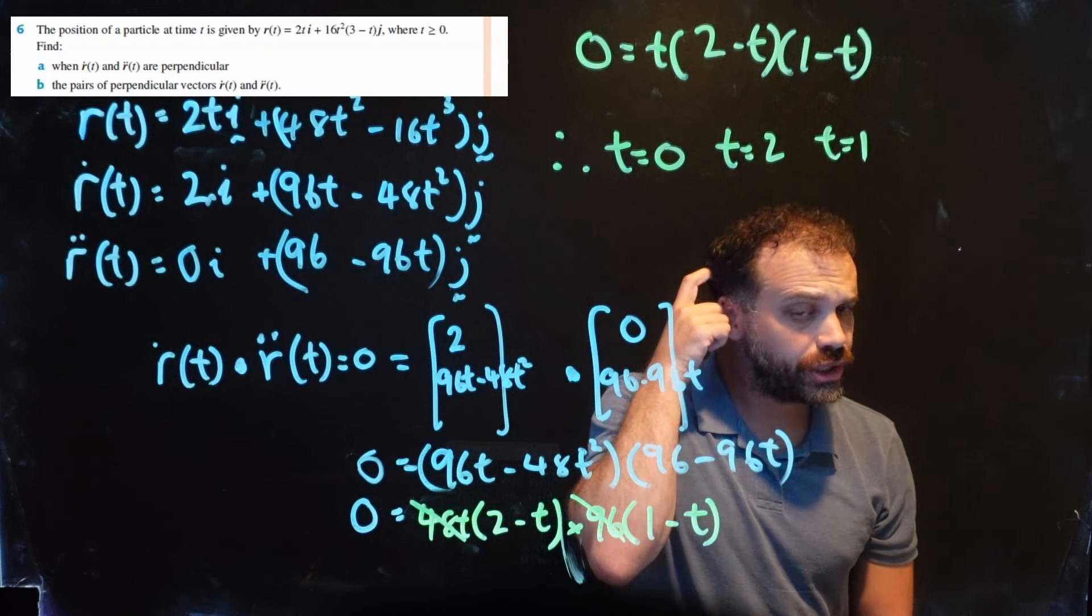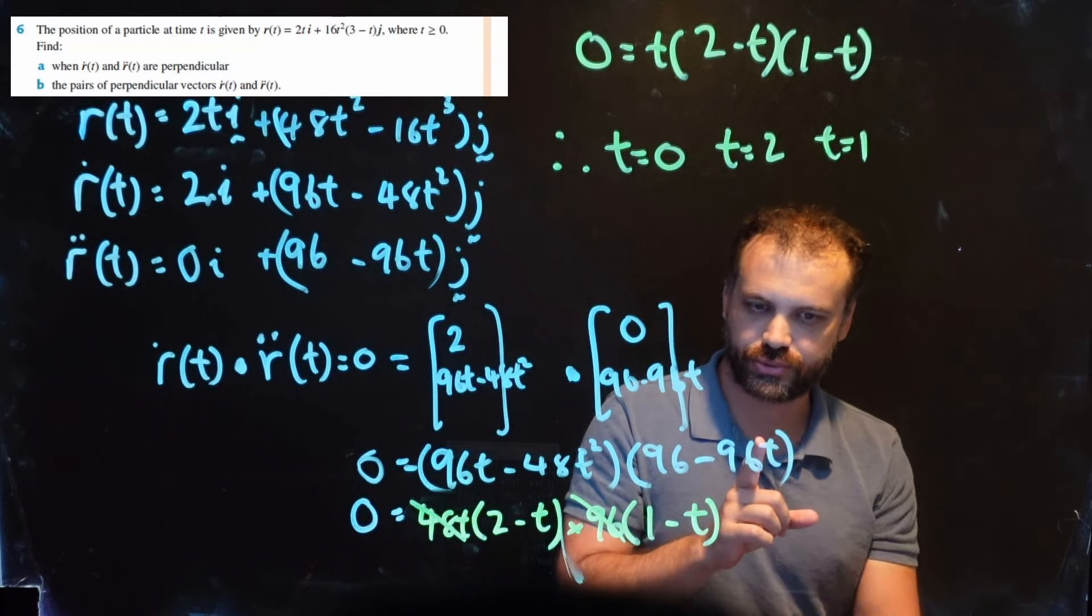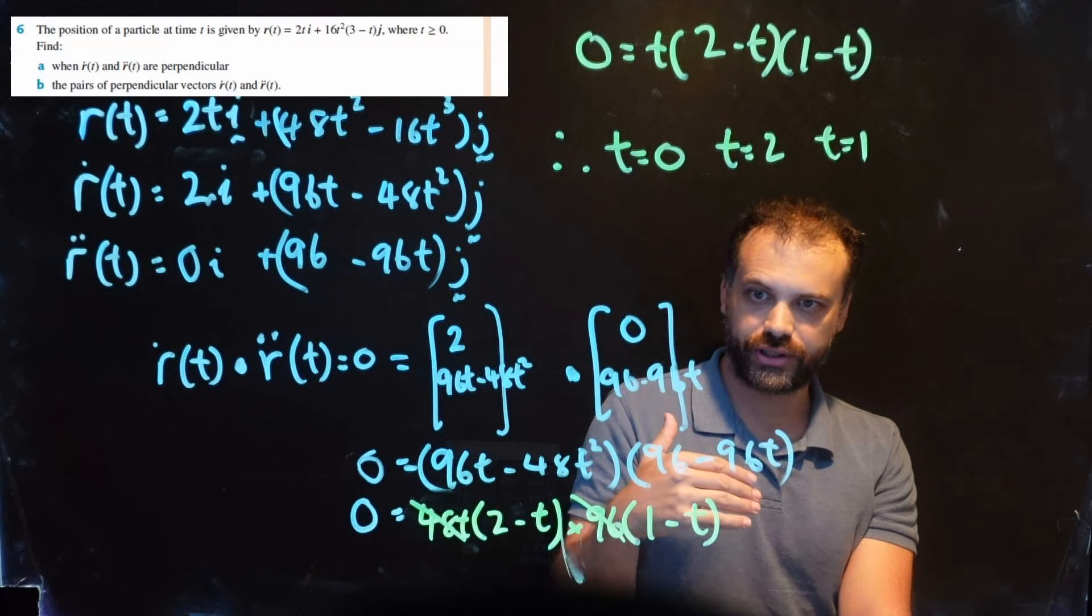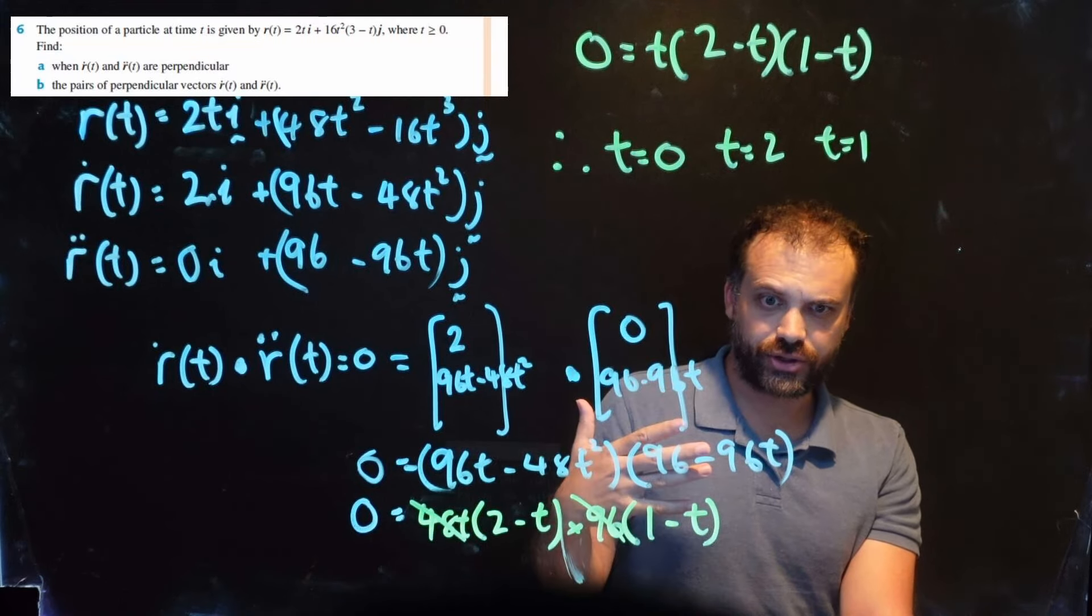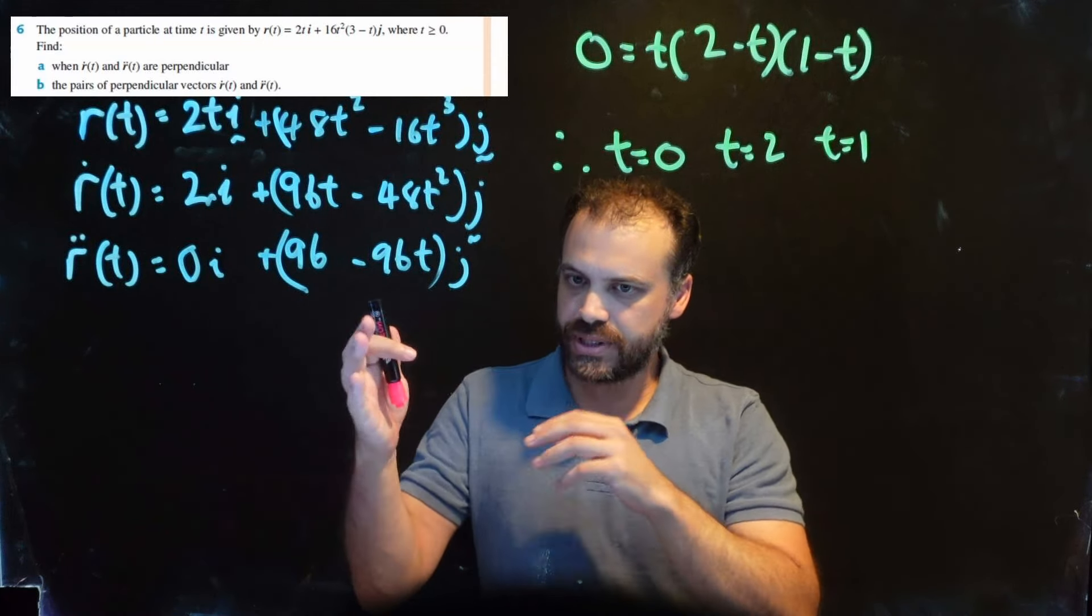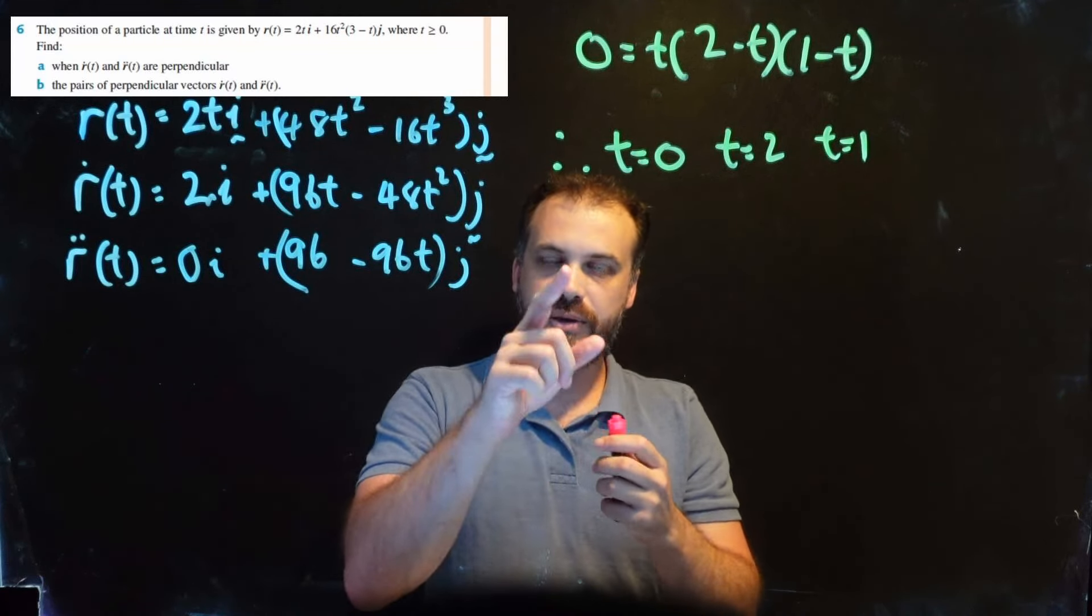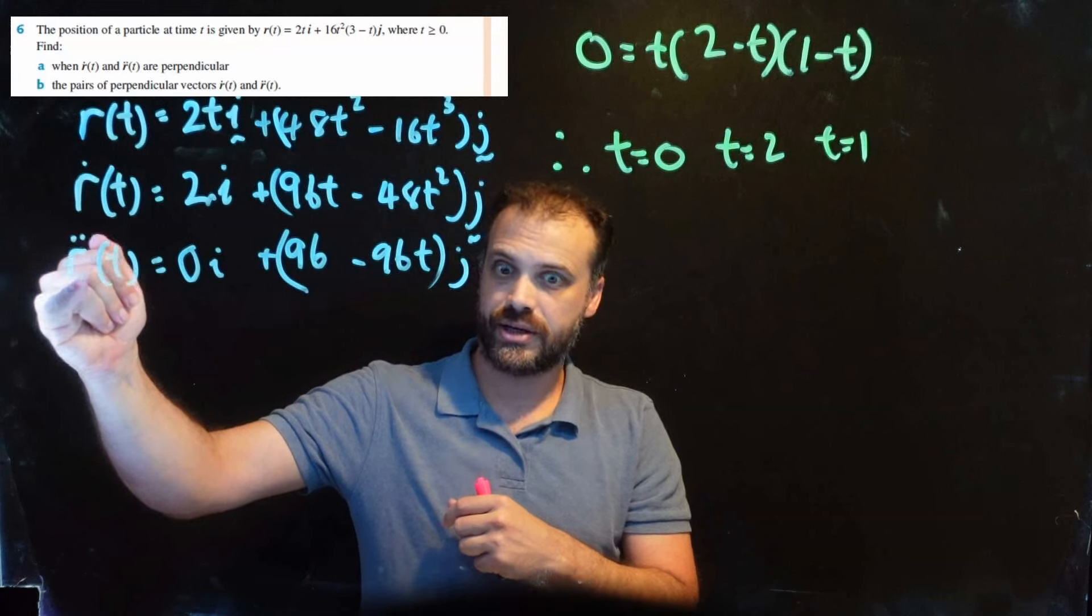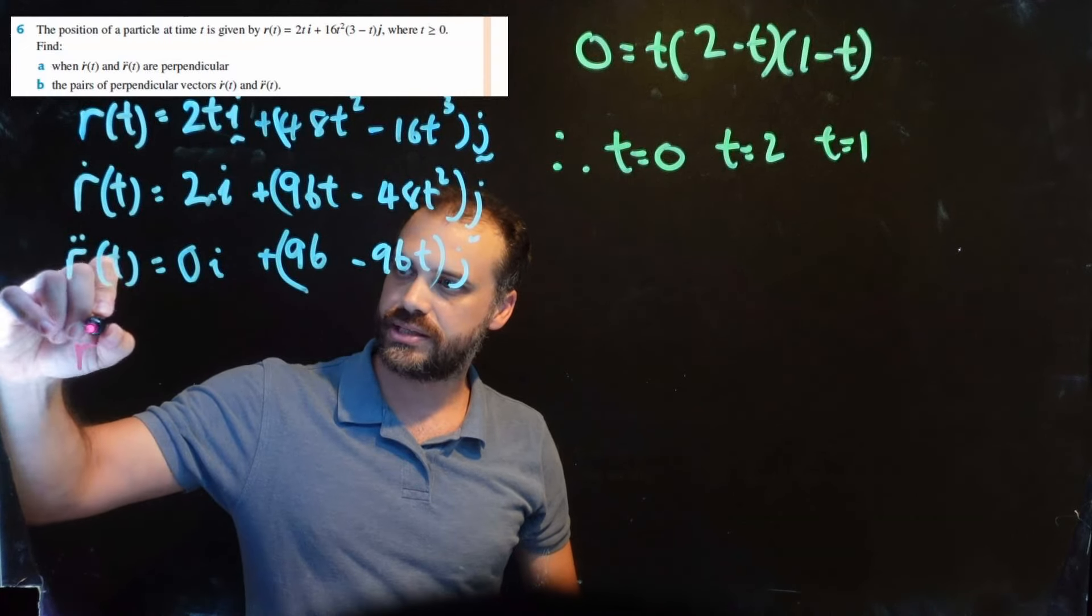And I thought that was very strange. They aren't. They aren't. Not all of those work. Only two of those work, arguably. Let's take a look at why one of them doesn't work. The reason you'll find out that they don't work is when you do part B. In part A, you don't know until you do part B. It's a sneaky bit. The next bit says show the pairs of perpendicular vectors. What they're saying is, if they're perpendicular at these times, what actually is the velocity and acceleration at those times?